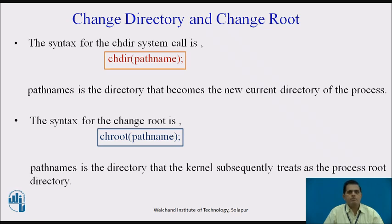The first file system command we have to see is change directory. The syntax is chdir pathname. Change directory means changing the directory from the current path to the next path. Here pathname is the directory that becomes the new current directory of the process. The pathname is followed in two ways: one is absolute pathname and another is relative pathname. Absolute pathname is related to the hierarchical file system, and relative pathname is related to the current directory of the process.